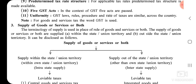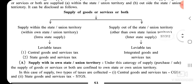Supply can be categorized as: A — within the state or union territory, which is called Intrastate Supply; and B — outside the state or union territory, other than own state or union territory, which is called Interstate Supply. For Intrastate Supply, the leviable taxes are Central Goods and Service Tax (CGST) and State Goods and Service Tax (SGST). For Interstate Supply, the leviable tax is Integrated Goods and Service Tax (IGST).